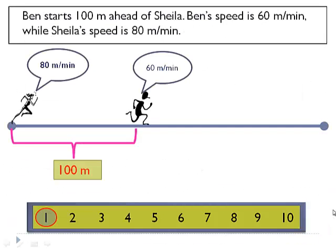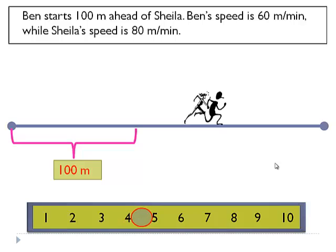Now we are going to see something similar. Ben starts 100 meters ahead of Sheila. Ben's speed is 60 meters per minute while Sheila's speed is 80 meters per minute. The question is: how long would Sheila take to catch up with Ben? Ben is also moving. Let's start the timer and see — Sheila managed to catch up in 5 minutes.